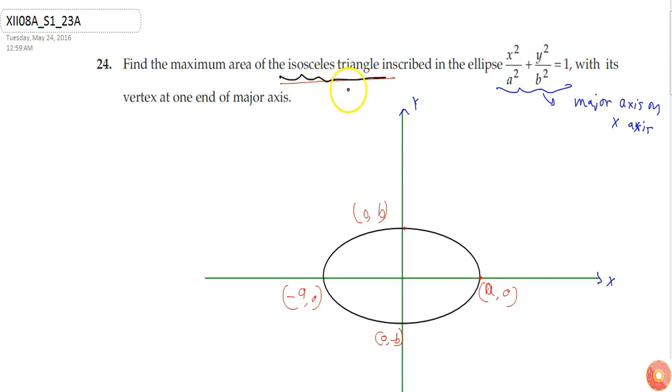I know that if two sides of an isosceles triangle are equal, let's say these are two sides of isosceles triangle and this is third side. If these two sides are equal, then I can say that the x coordinate of other vertices will be equal.